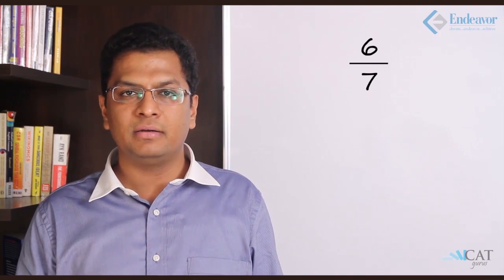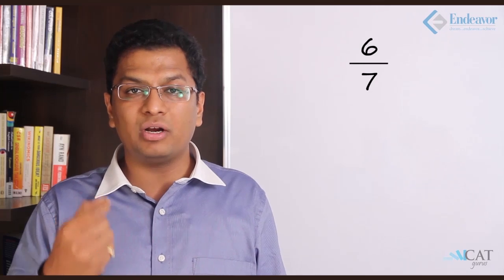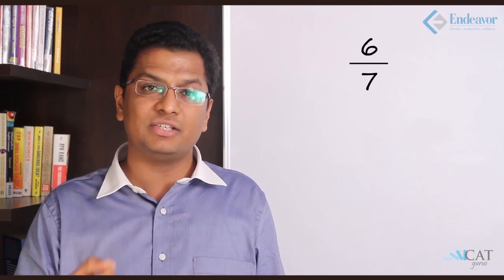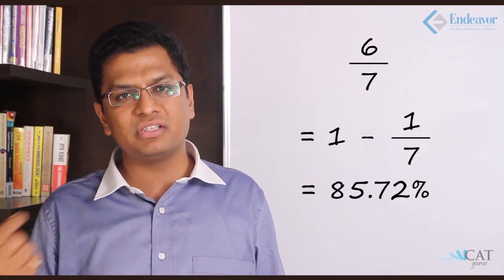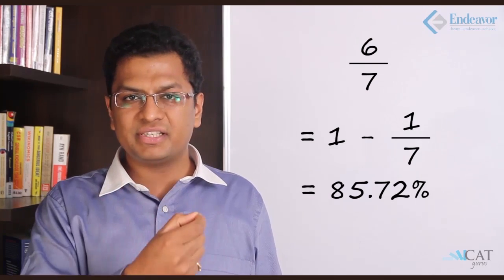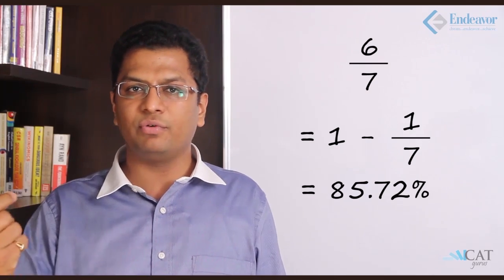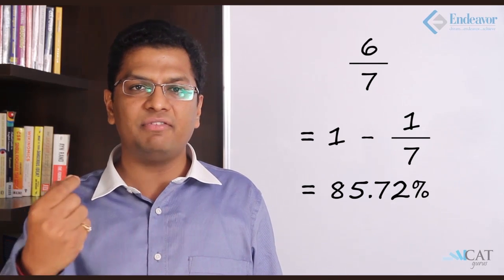Let us see how much more we can do. Now 6 upon 7 - I won't multiply 1 upon 7 into 6. 1 upon 7 is 14.28%. What will we do? Let us do 1 minus 1 upon 7. So it is 100% minus 14.28%, which gives us 85.72%. That makes it simple.